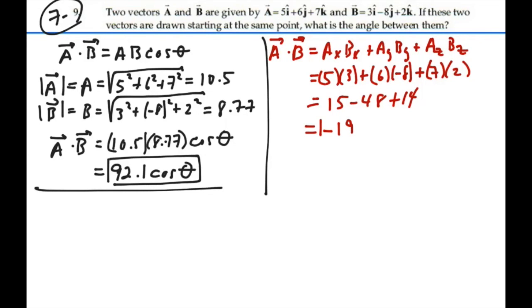That is the scalar product, A dot B, a negative nineteen. If we combine these two together, we basically are saying A dot B should equal A dot B. So we have ninety-two-point-one cosine theta should be equal to a negative nineteen. Solving for theta, then, we will have that theta should equal the inverse cosine of a negative nineteen divided by ninety-two-point-one.